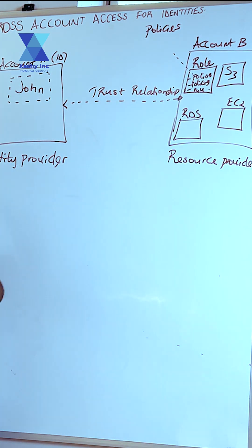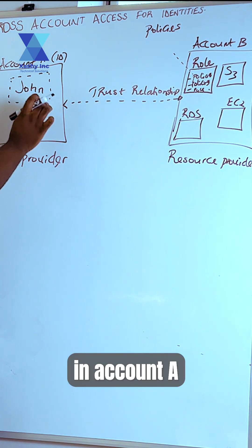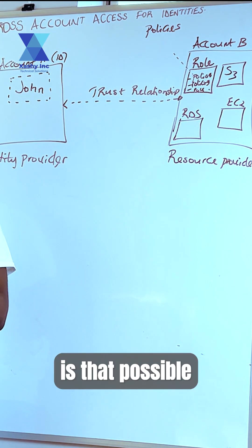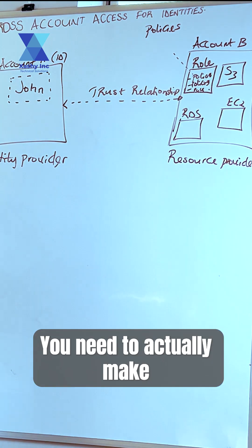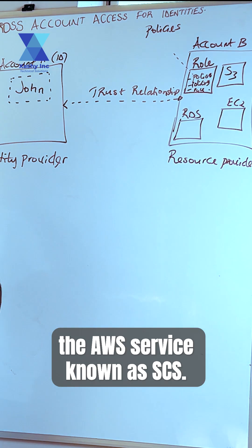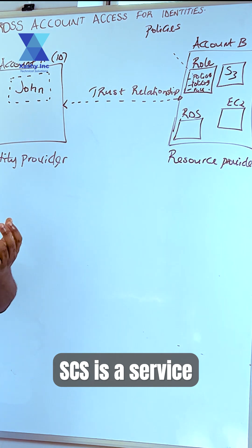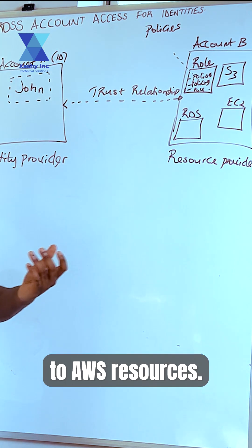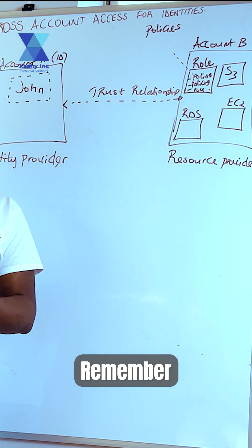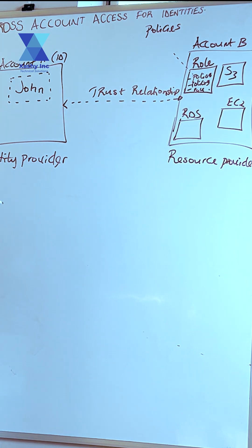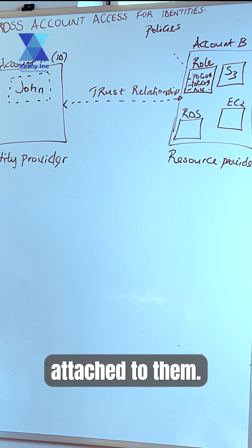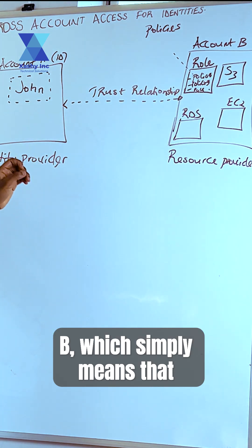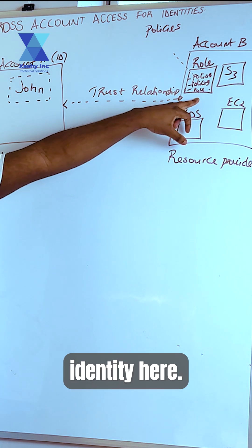The question is: how would the user John in account A be able to make use of the role in account B? For this to work, you need to make use of the AWS service known as STS. STS is a service that gives temporal access to AWS resources. Remember, identities on AWS cannot have roles attached to them. The identity is in account A and there is no identity in account B, which means that this identity cannot automatically assume this role.